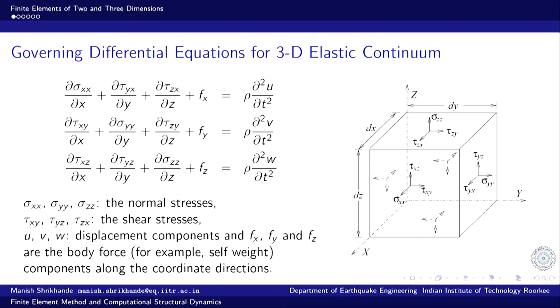The discussion begins with the governing differential equation. This is the familiar stress block — a small infinitesimal cuboid of dimensions dx, dy, dz — and the stress components are marked on each of the six faces. On the positive faces, the names of the stress components are also marked: sigma_xx, sigma_yy, and sigma_zz are the normal stresses along the respective directions, and tau_xy, tau_yz, and tau_zx are the shear stresses.